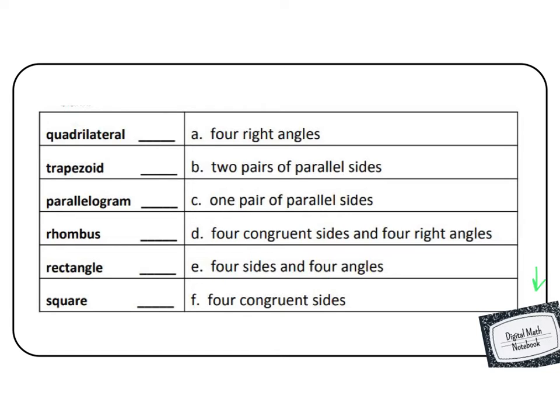We are looking to match the definition to the word on the left. Our first word is the word quadrilateral. Remember that the word quad means four. So we're looking for a shape with four sides. Let's see. Not right angles, not parallel. All right. Four sides and four angles. Four sides, four angles. That would be E. A quadrilateral is a shape with four sides and four angles.